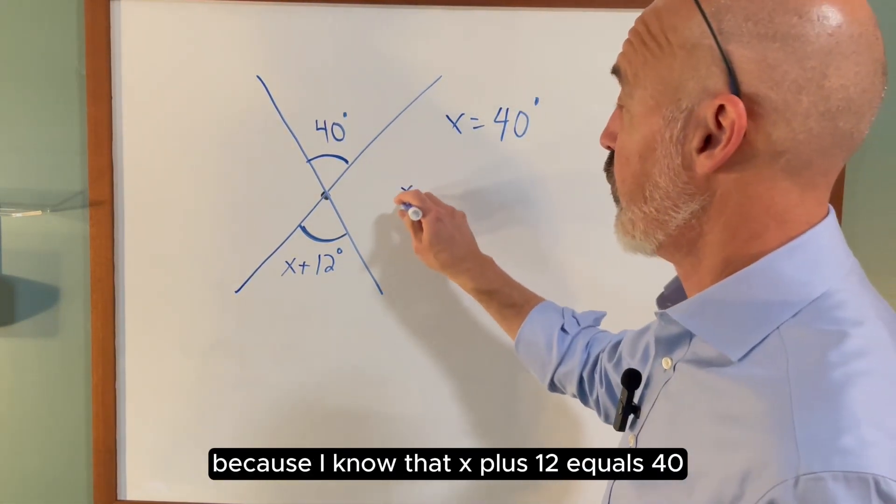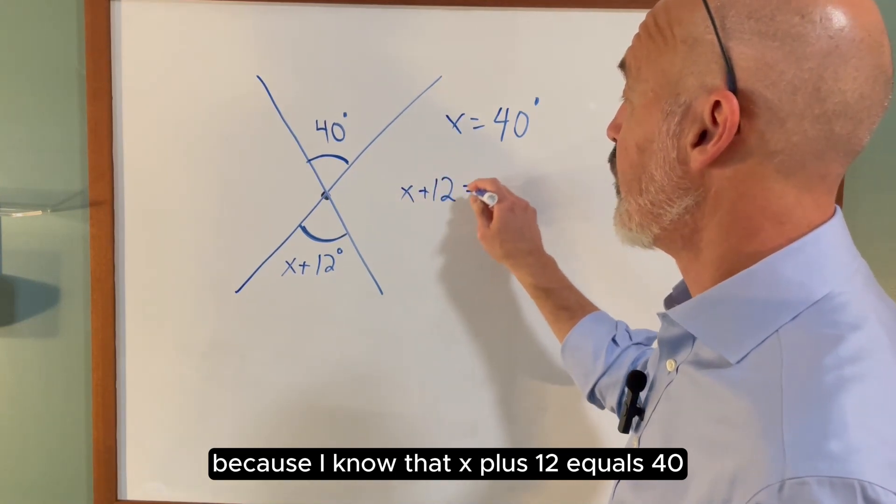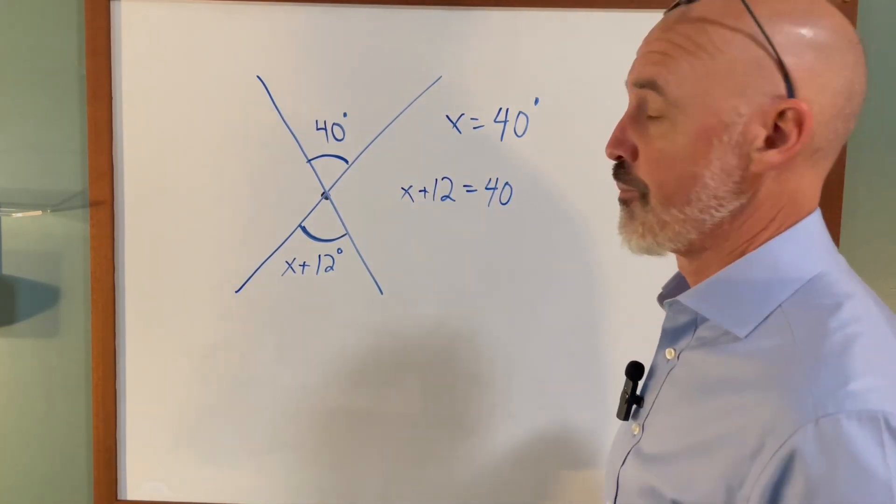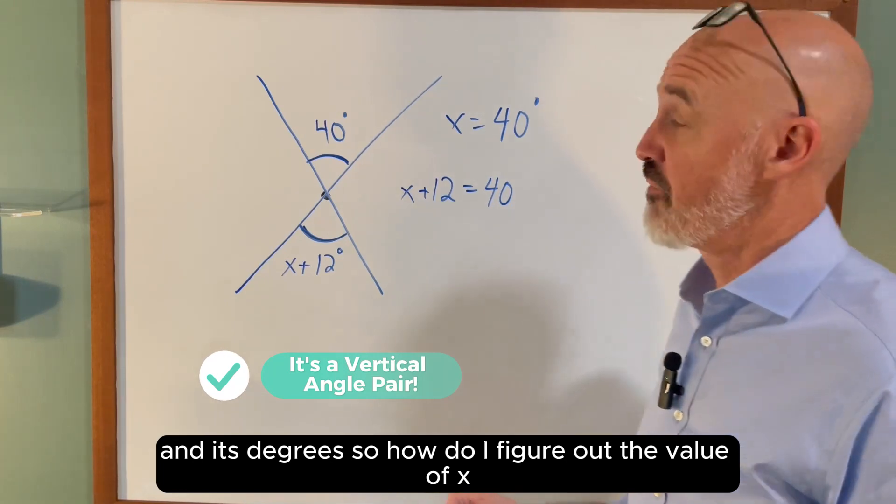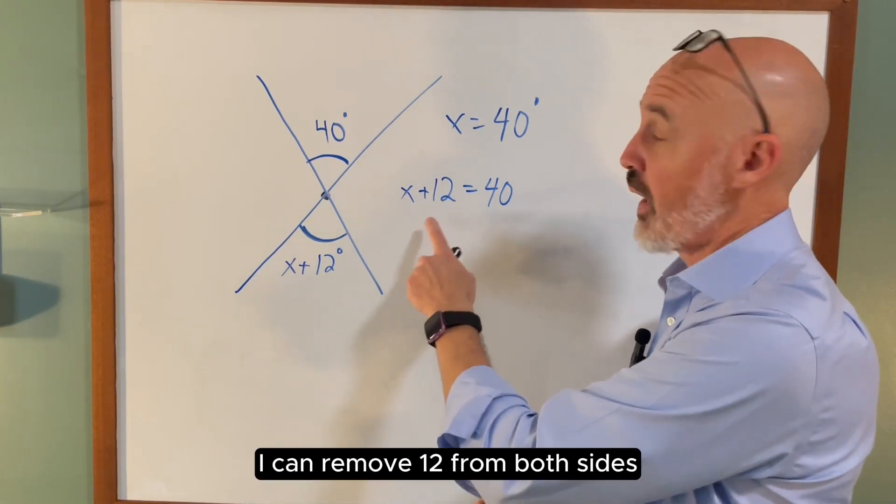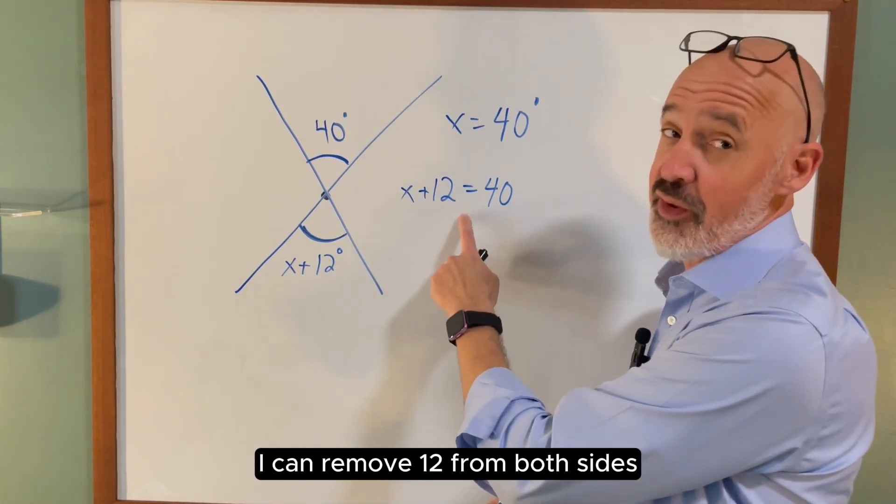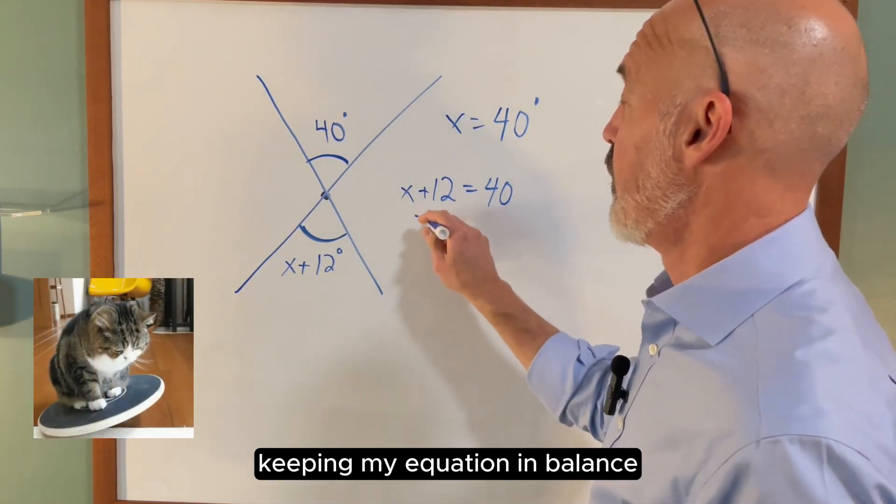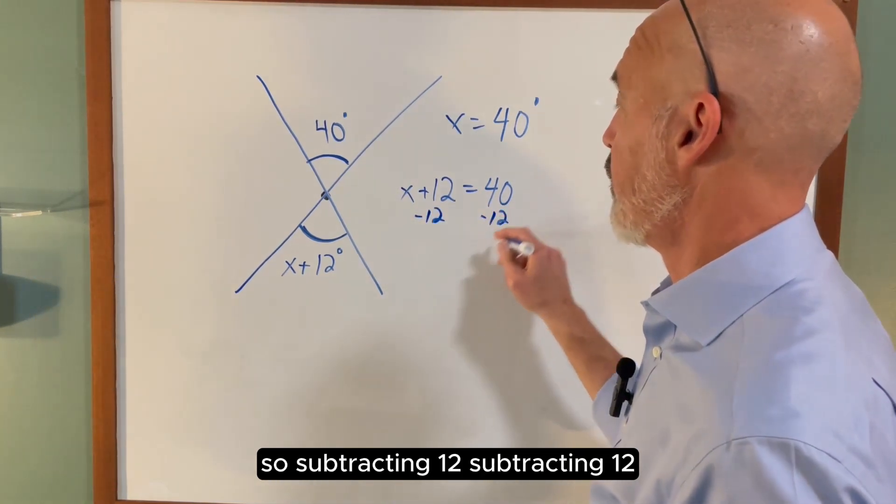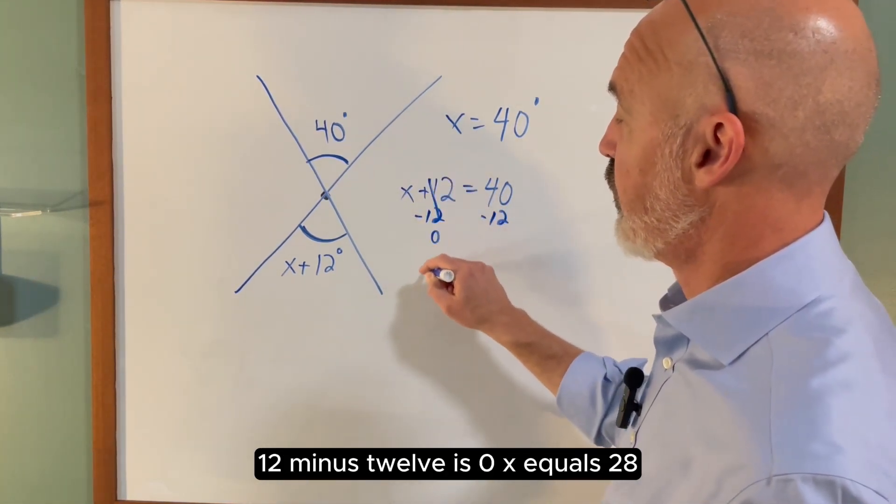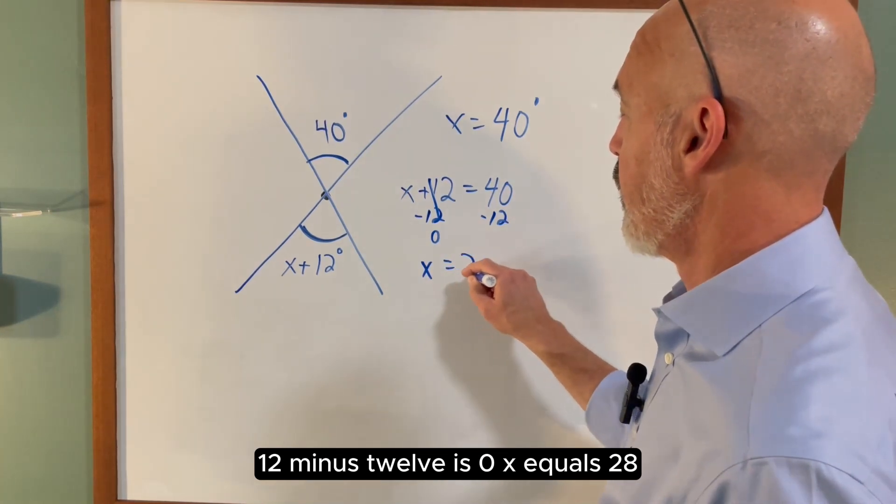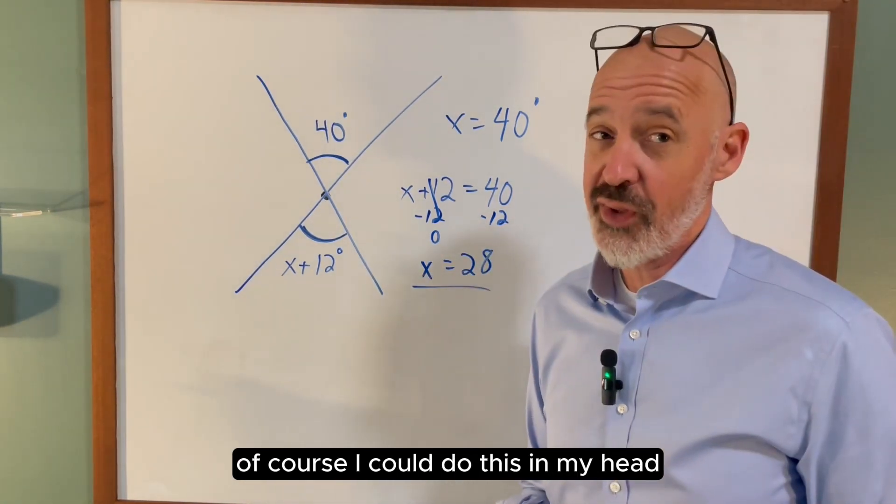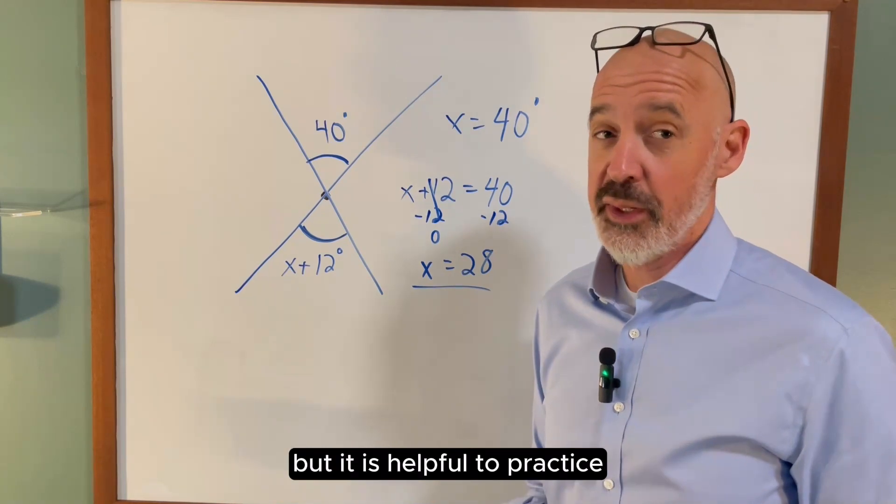So how do I figure out the value of x? I can remove 12 from both sides, keeping my equation in balance. So subtracting 12, subtracting 12, 12 minus 12 is 0, so x equals 28.